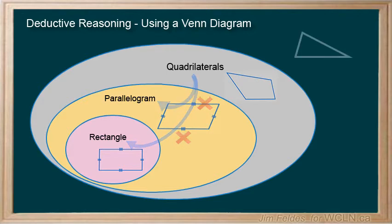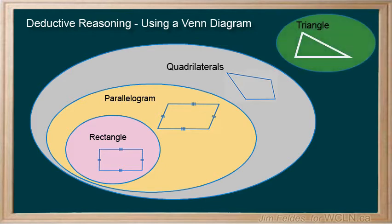Our reasoning can extend to shapes like triangles. As they have only three sides, we can conclude they are not quadrilaterals, and therefore need to be placed on their own.